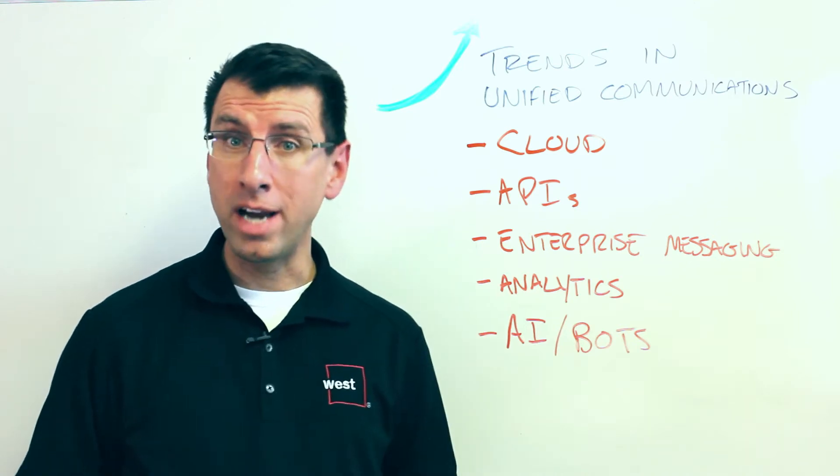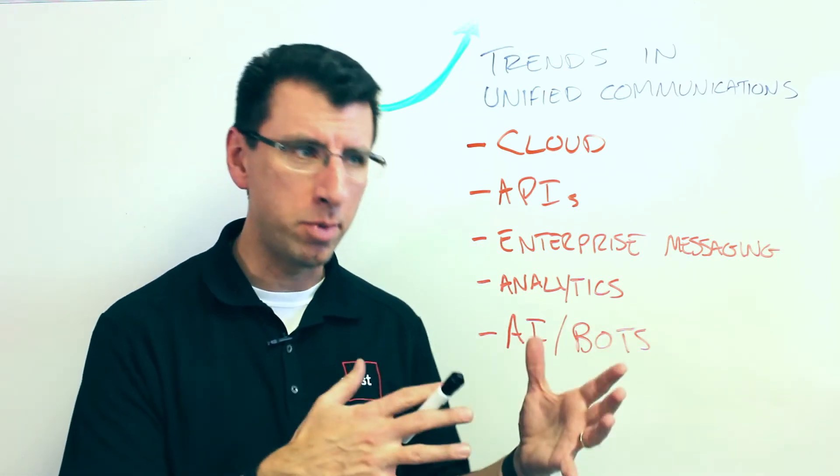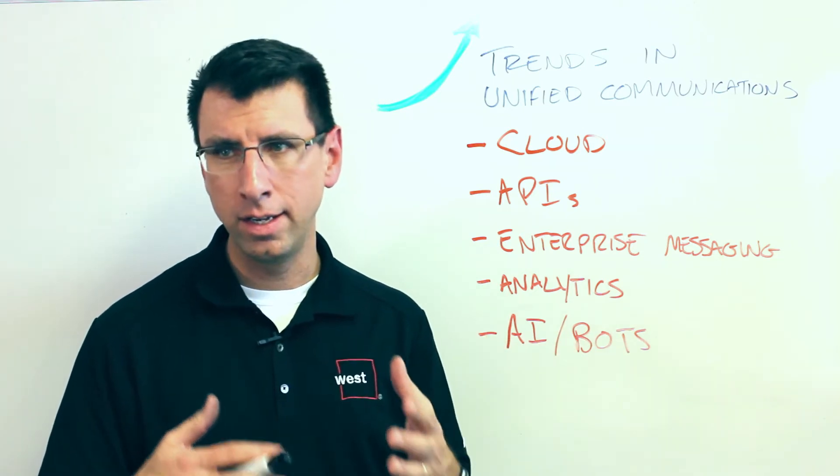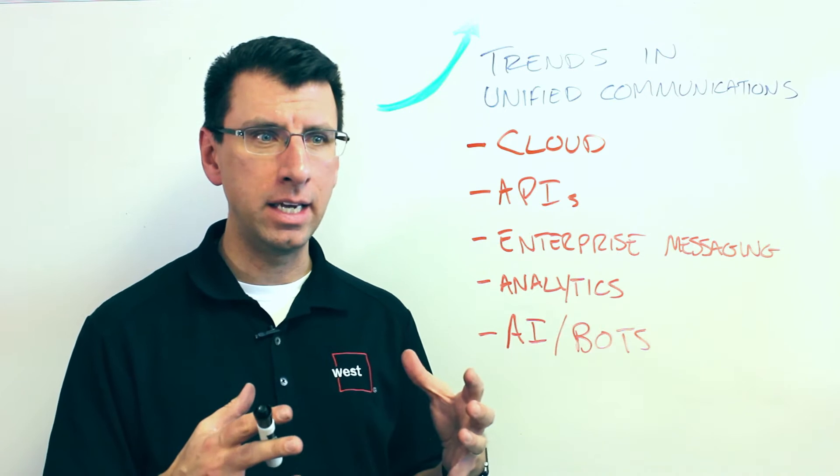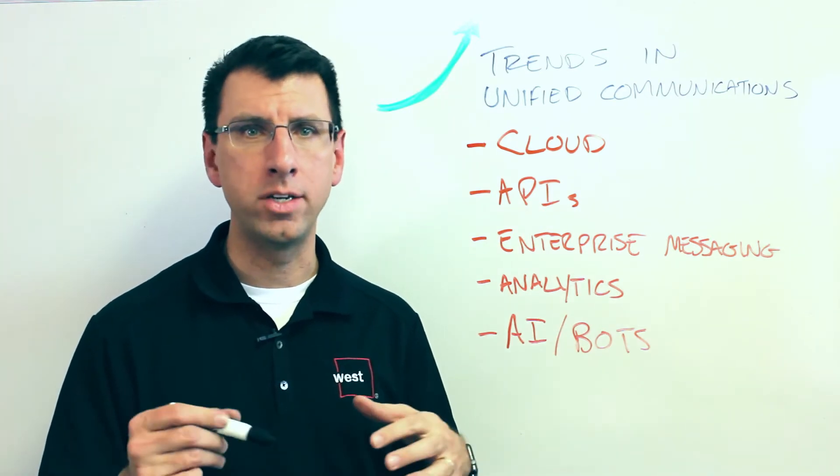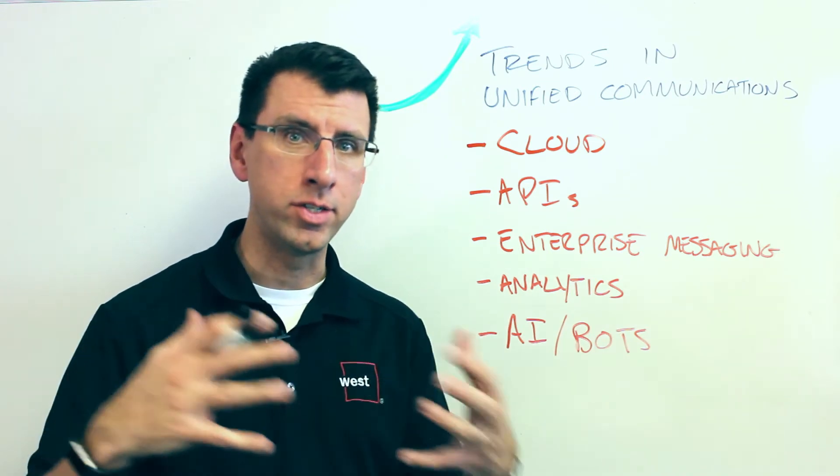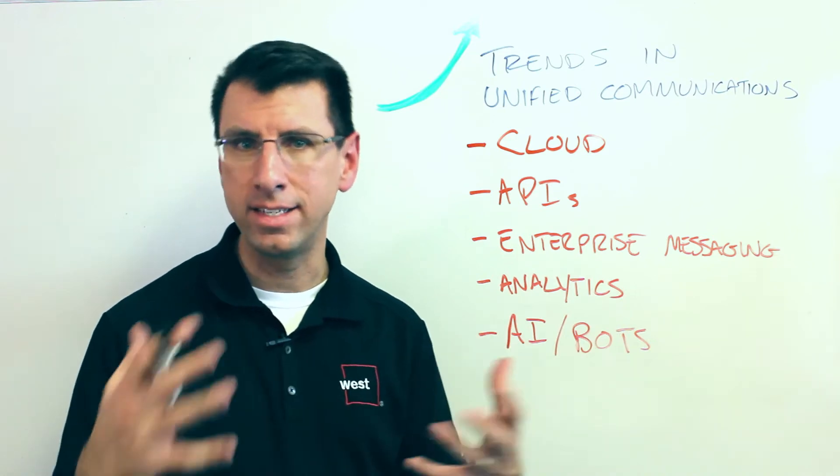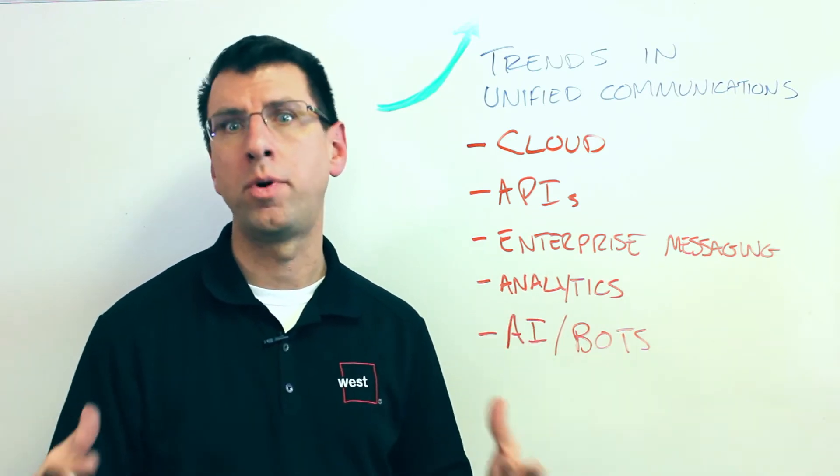The third one is Enterprise Messaging. Different people use different terms for this: Enterprise Messaging, Business Messaging, some of the analysts use the term like Workflow Collaboration. It's basically the things that you see like Slack and Spark and Microsoft Teams and those sorts of applications where you're collaborating, you're leaving messages with one another, you're sharing content, but you're doing it in a kind of an asynchronous way and it kind of fits into a team structure or project structure.